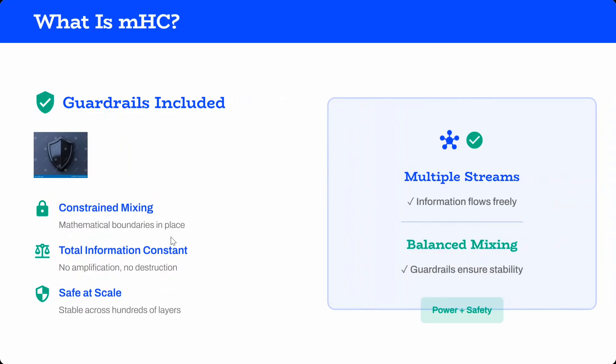This is where MHC comes in - it has guardrails included. Constraint mixing: you're still mixing it, doing x_i plus a, x_i times a, x_i divided by a, but making sure the final output is constrained, within limits, so it doesn't explode or decay. Total information is constant, no amplification, no disruption, and safe at scale. It's similar to clipping, but the way it's done is a little different - normalization is getting used.